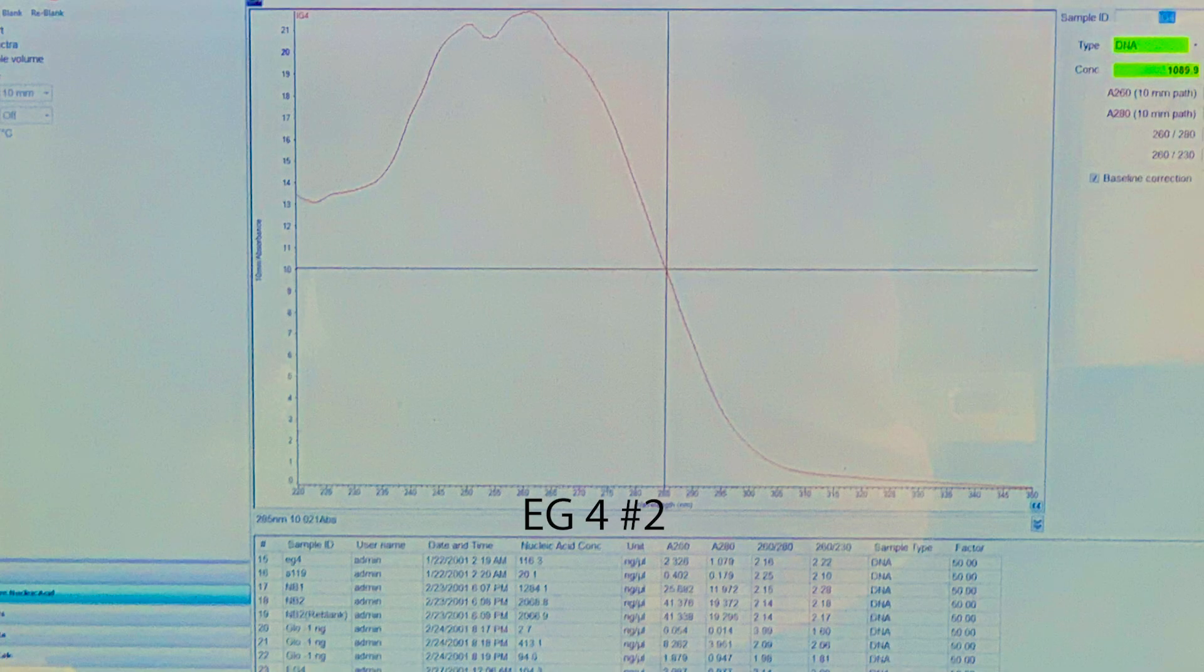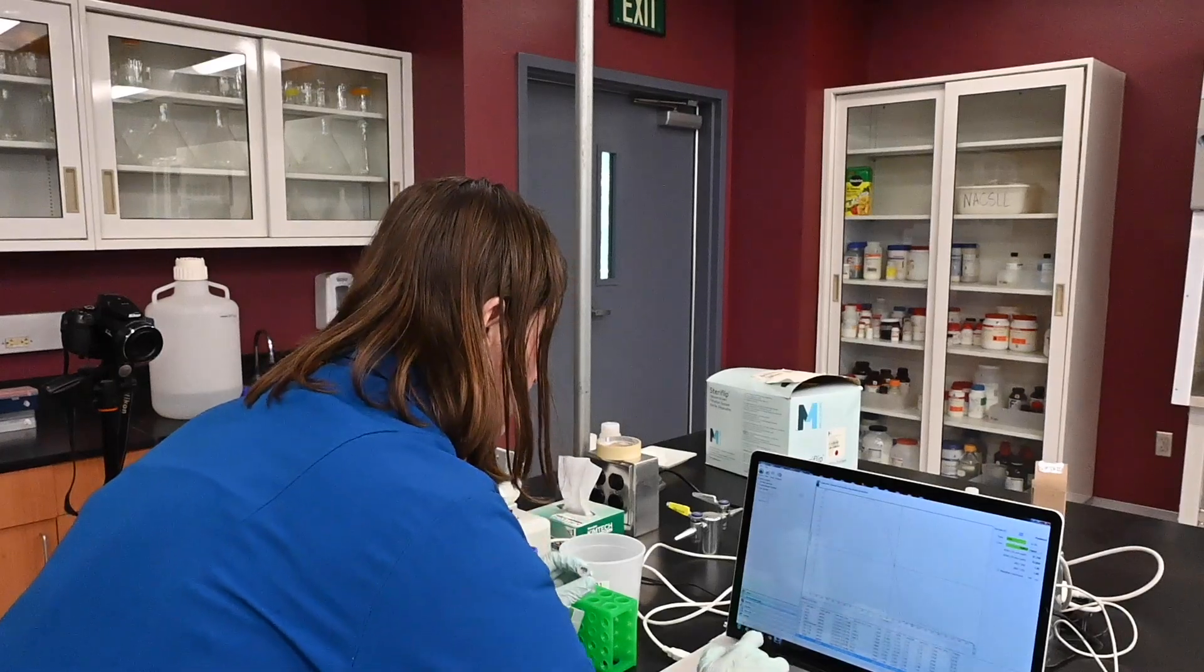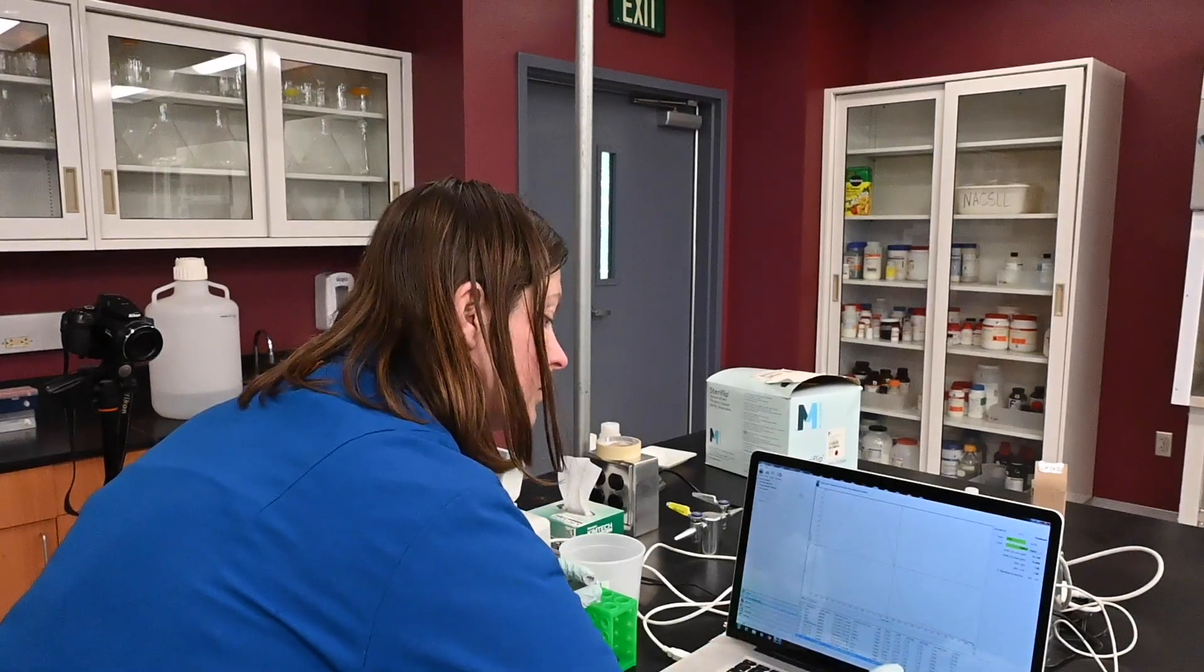And here, the green box, it says concentration 1089.9. That's my concentration of DNA in nanograms per microliter.